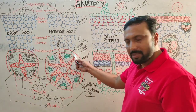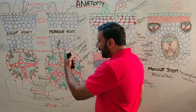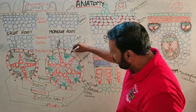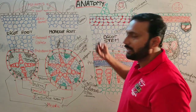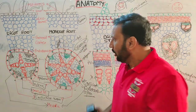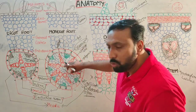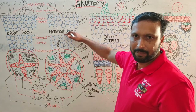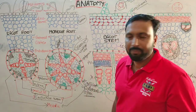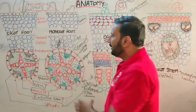The innermost layer of the cortex is the endodermis. Endodermal cells are barrel-shaped and arranged compactly without intercellular spaces. On the radial walls and transverse walls, Casparian thickenings are present. These are made up of lignin and suberin, which prevent the movement of water from the stele to the outside. Some endodermal cells opposite to the protoxylem lack Casparian thickenings and are called passage cells.